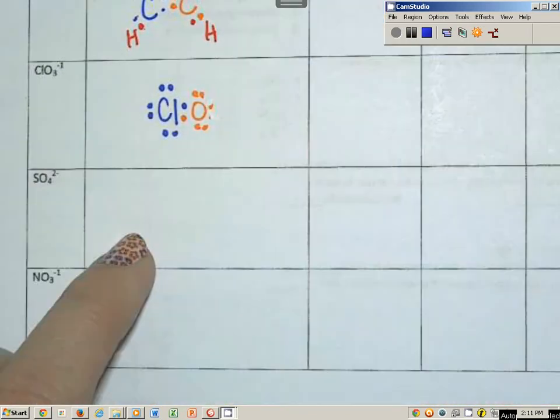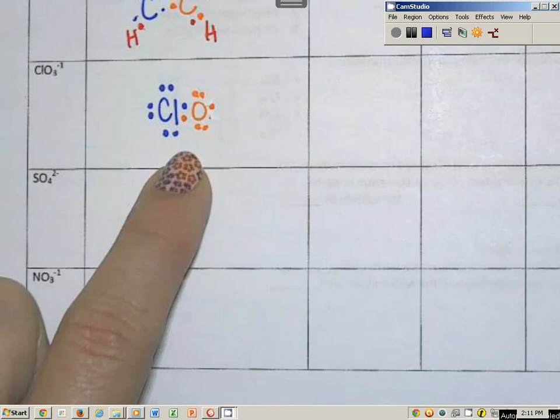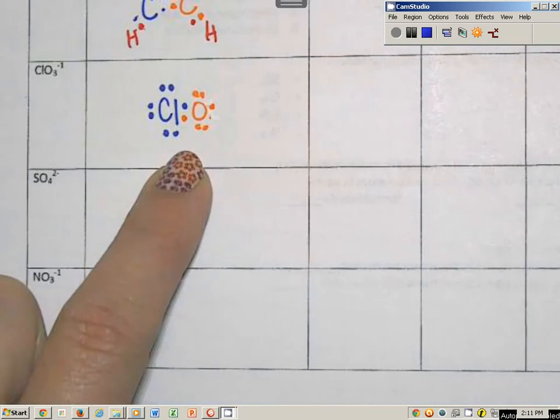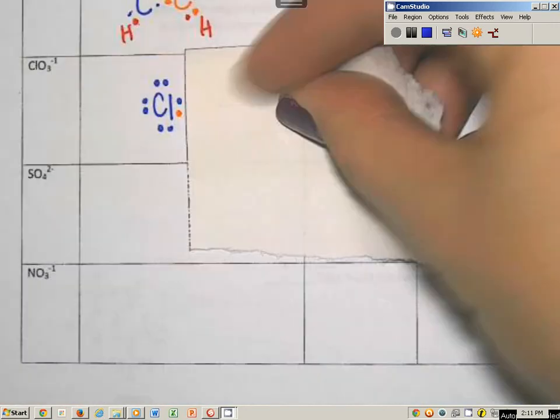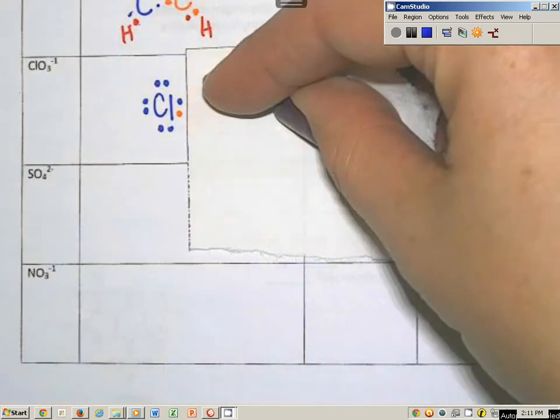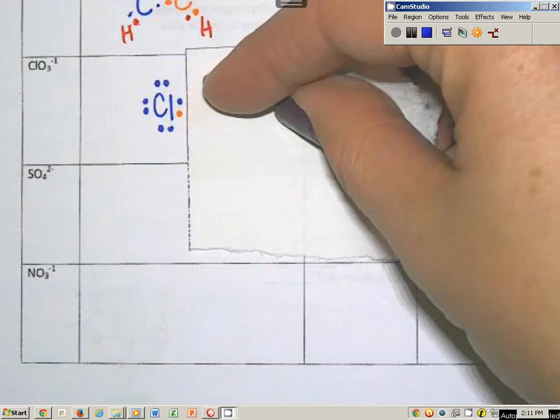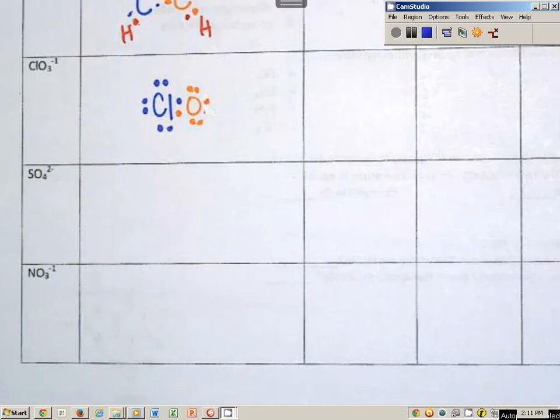Alright, now I can't make any more single bonds, because if I cover up, that oxygen chlorine looks like it has eight. It's happy. It's met the octet rule. So if I can't make any more single bonds, while ago I told you I couldn't make any more double or triple either. I can't make any more traditional bonds. I can make coordinate covalent.